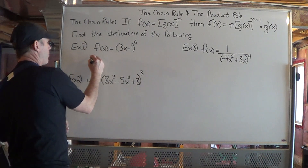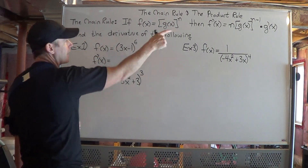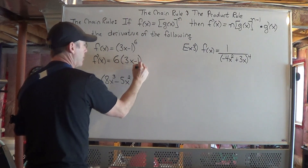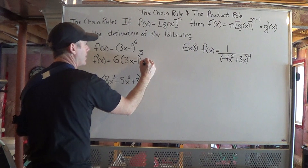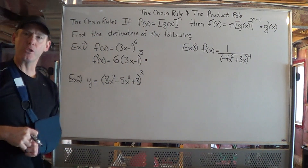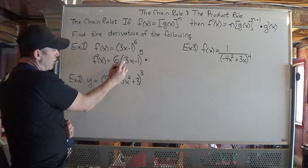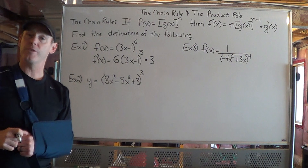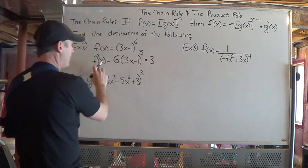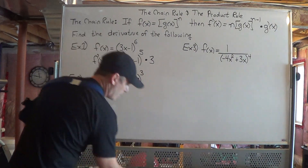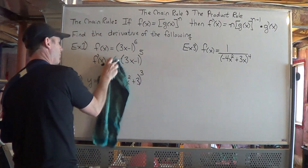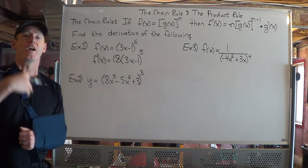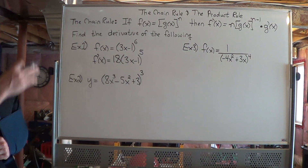So I find f prime of x. There's my function inside the brackets — I bring the 6 down, multiply it by 3x minus 1, and subtract 1 from the exponent, just like we did with the power rule. Then we take the derivative of the inside of the function. The derivative of 3x is just 3, and the derivative of negative 1, that's a constant so the derivative is zero. Simplifying, 3 times 6 gives us 18 out front. So our final derivative is 18 times 3x minus 1 to the power of 5. That's much quicker than expanding the polynomial out and then using the power rule.